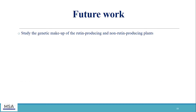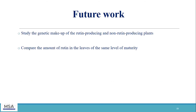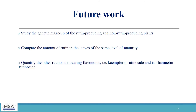Future work will therefore be to study the genetic makeup of the rutin-producing plants and the non-rutin-producing plants, just to see what exactly is at play. We can also compare the amount of rutin in leaves of the same level of maturity — combining fresh leaves and old leaves, and comparing the amount of rutin within each maturity class. We also plan to quantify the other rutinoside-bearing flavonoids, that being kaempferol rutinoside and isorhamnetin rutinoside.